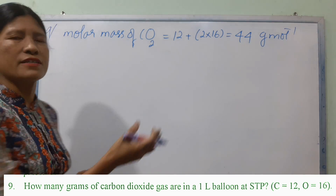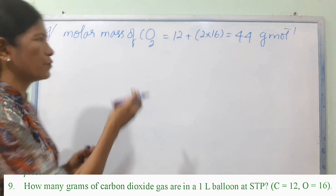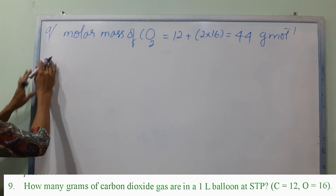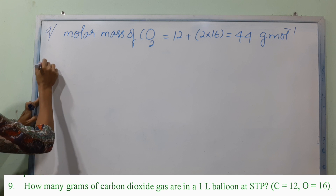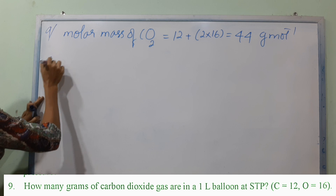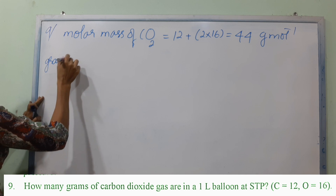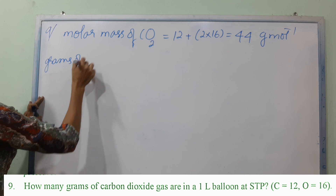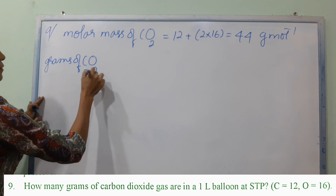Number 13. NaN3, sodium azide, decomposition produces nitrogen gas. Number 11, NaN3, sodium azide, and sodium azide.